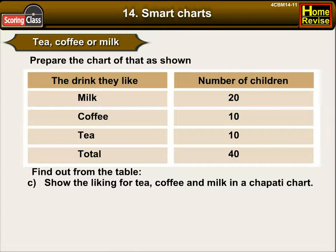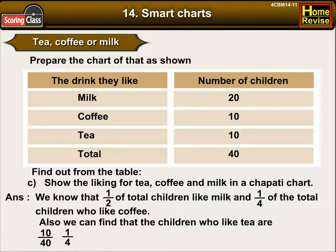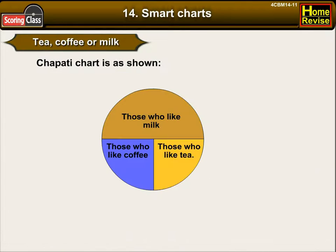C: Show the liking for tea, coffee and milk in a chapati chart. We know that half of total children like milk and one-fourth like coffee. We can also find that children who like tea are ten upon forty, that is one-fourth of total children. So the chapati chart is as shown, with sections for those who like milk, those who like coffee, and those who like tea.